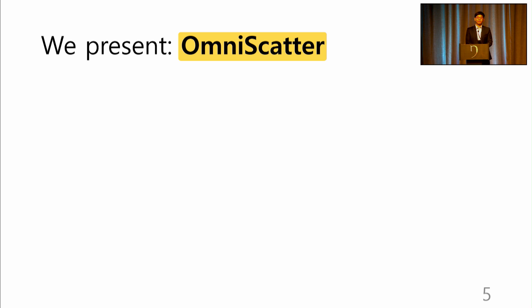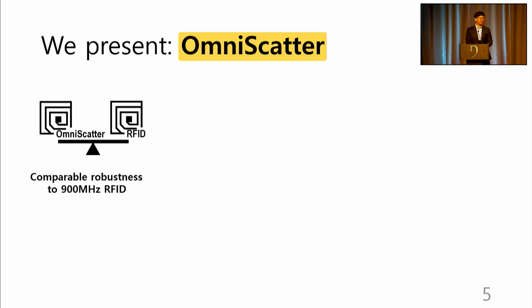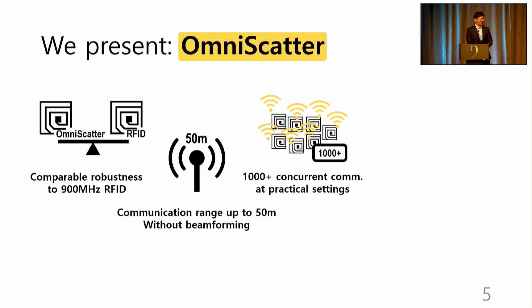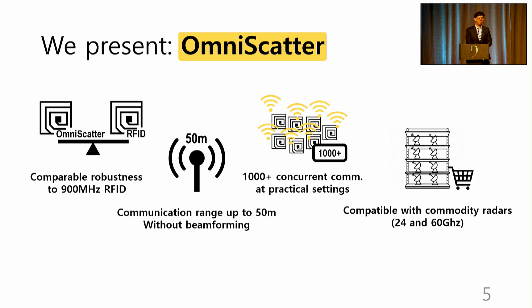Exploiting such benefits, Omniscatter proposes millimeter wave backscatter for massive applications. The robustness of Omniscatter is comparable to 900 megahertz RFID enabling deployment in practical environments. The communication range of Omniscatter reaches 50 meters without beamforming. Our trace-driven evaluation demonstrates concurrent communication scaling over thousands of tags. Furthermore, Omniscatter can be implemented on commodity radars for compatibility.